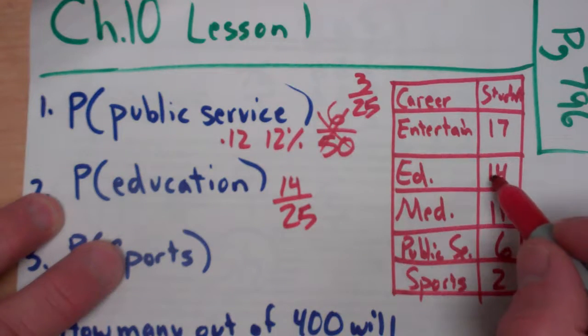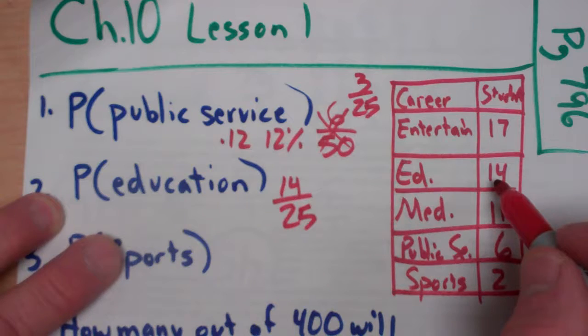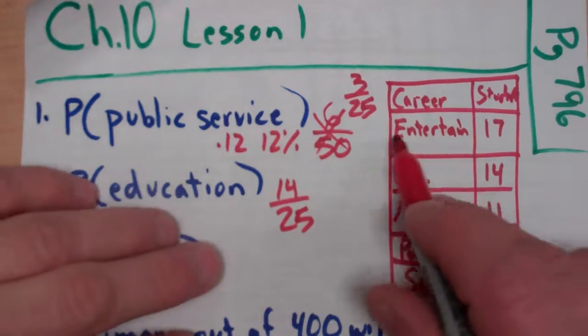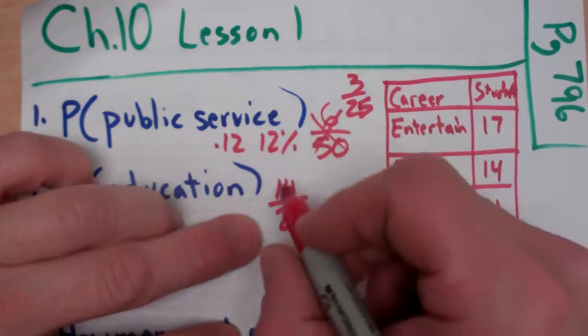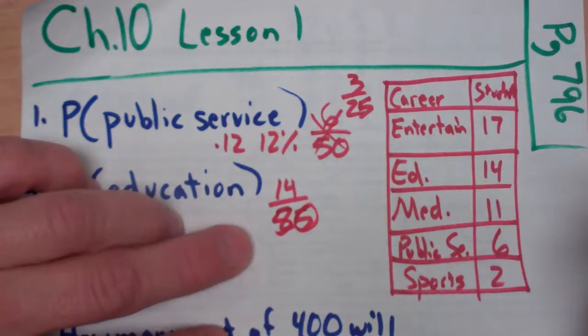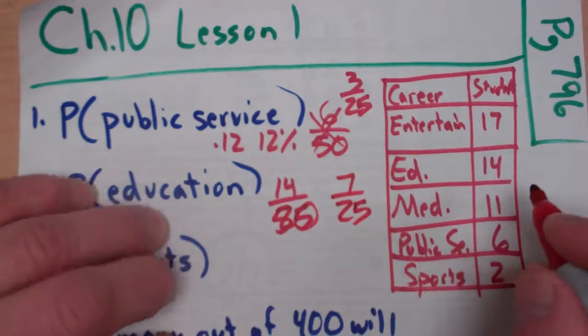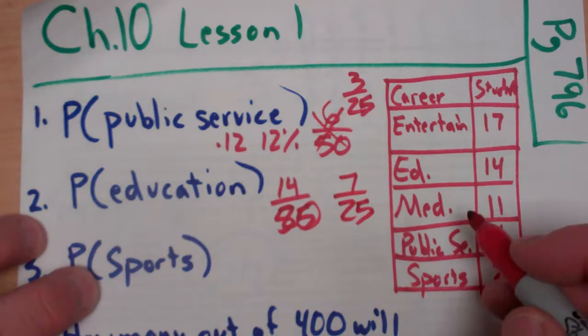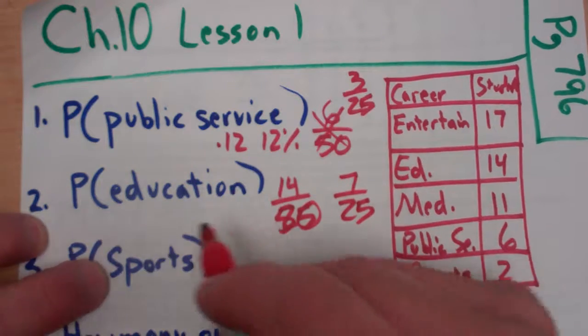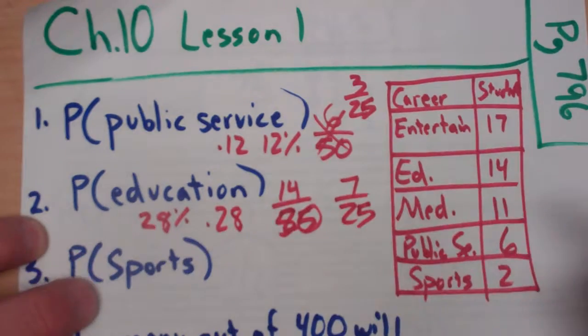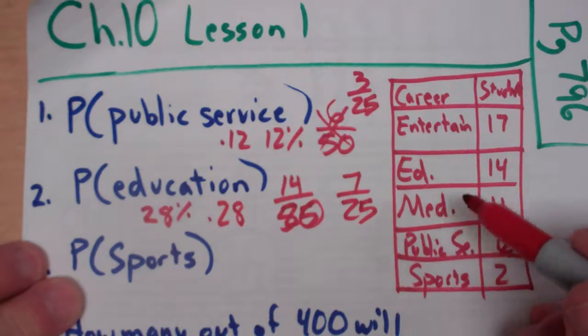Did I just choose the wrong one? Education, 14. Yeah, that's okay. So, 14 out of 50. I'm going back to this 25. I looked at that 25. There were 50 in our population. Sorry, 14 out of 50, which is 7 out of 25. Now I could divide that and move the decimal two places. You're going to get a 28% or 0.28 chance of choosing somebody that's wanting to go into education.